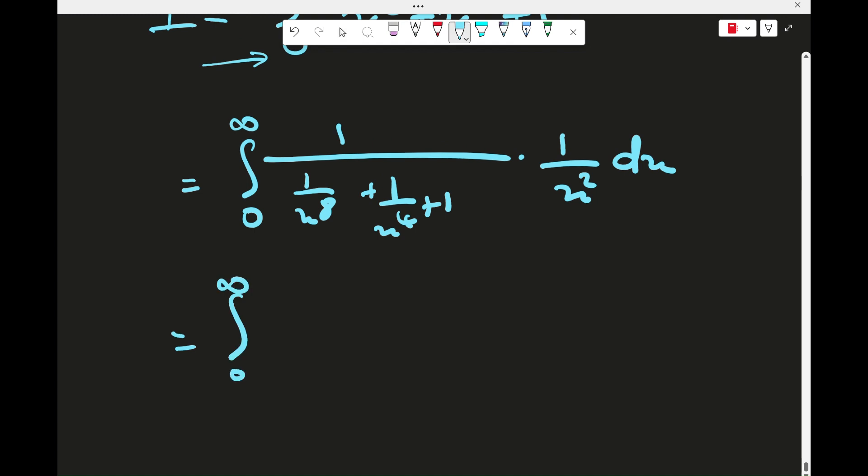So what do we have? We could multiply top and bottom by x to the 8. And if you multiply by x to the 8, this thing would become x to the 6 at the top, and the denominator would become 1 plus x to the 4 plus x to the 8.